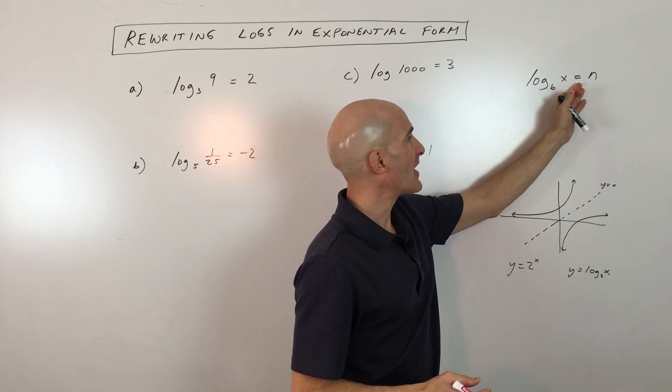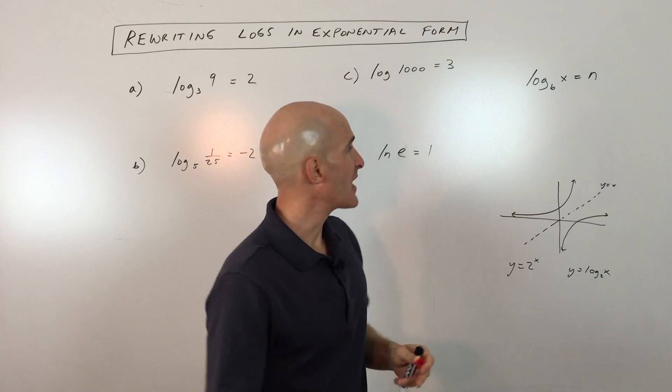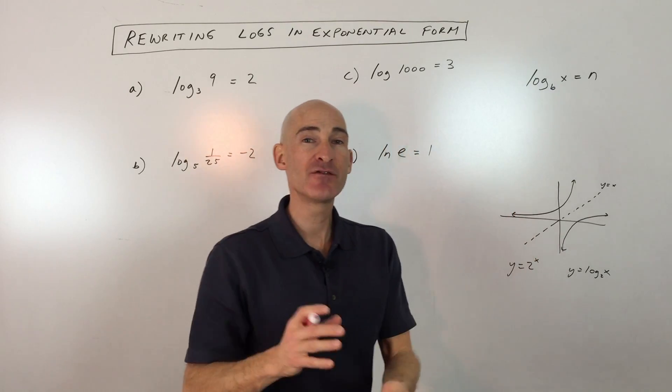So let's say we have log base b of x equals n. What you want to do is change this into exponential form by doing the inverse operation.